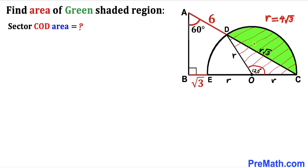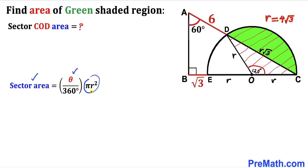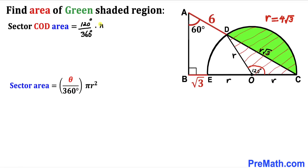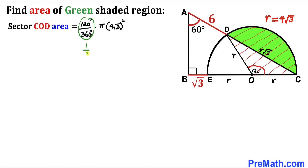We are now going to calculate the area of sector COD. Recalling the sector area formula: Area = (θ/360°) · πR². In our case, θ = 120° and R = 4√3, so: Area = (120/360) · π · (4√3)² = (1/3) · π · 48 = 16π. So the sector area is 16π.